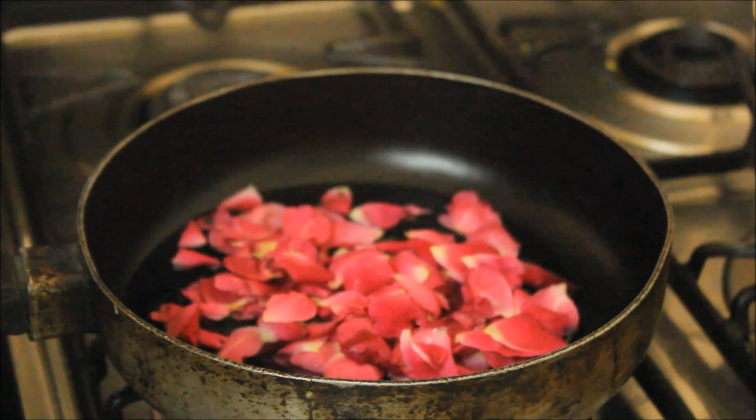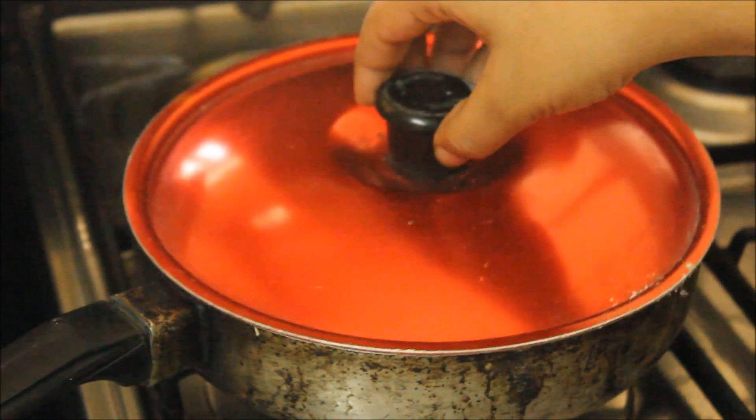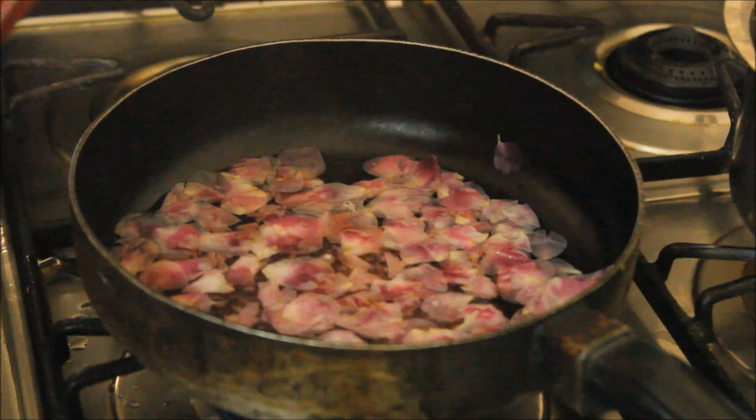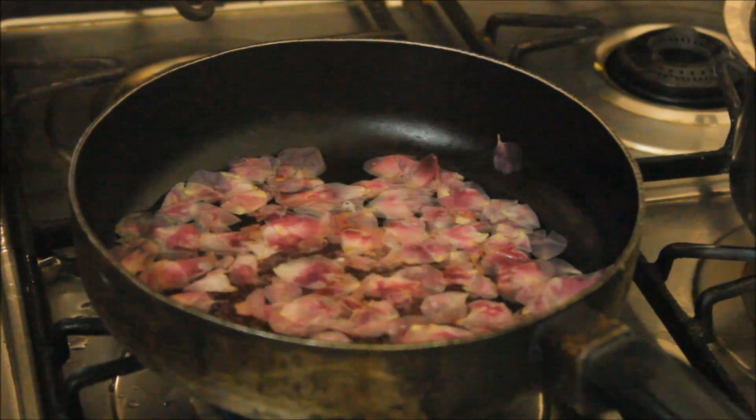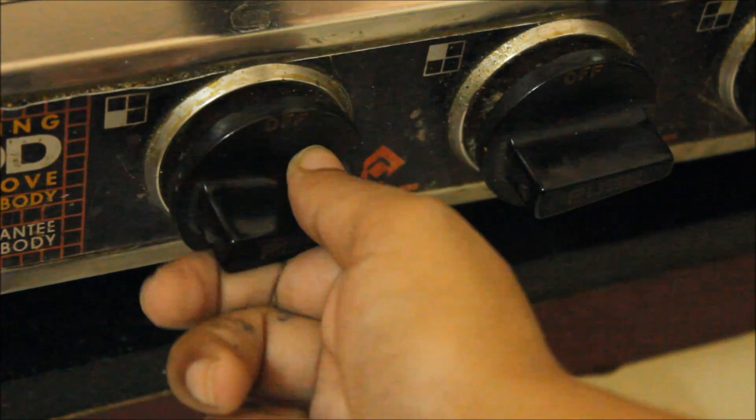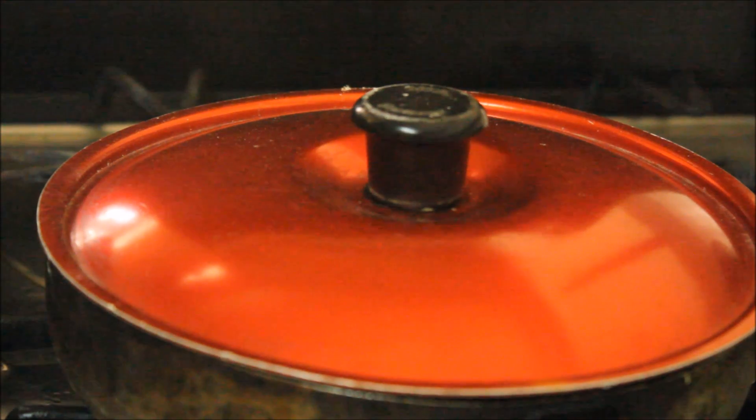Once that is done, you want to just put a lid onto the pan and you want to stir it after a while so that water coats all the roses. And you want to simmer it till the rose loses its color. And then you want to turn off the flame and let the water cool down for a while. Maybe overnight. Maybe 6-7 hours. However you are comfortable.